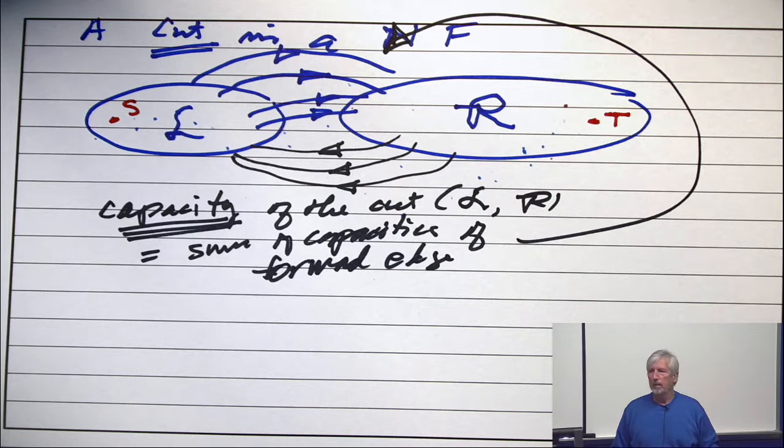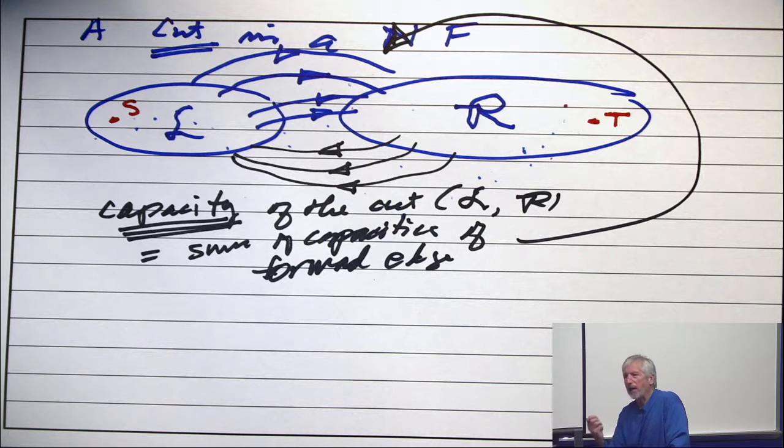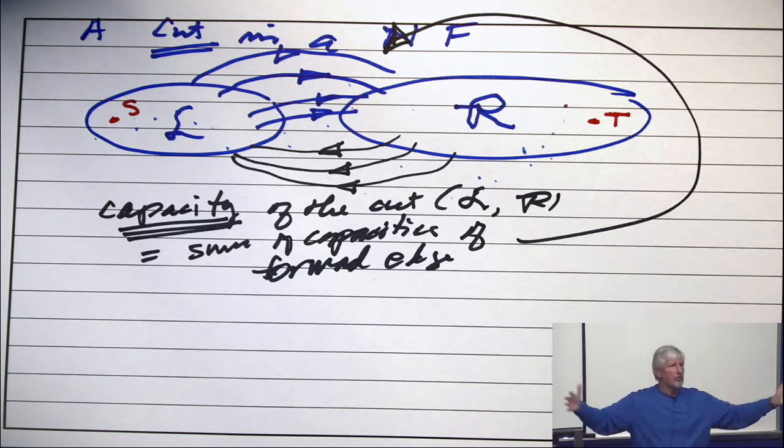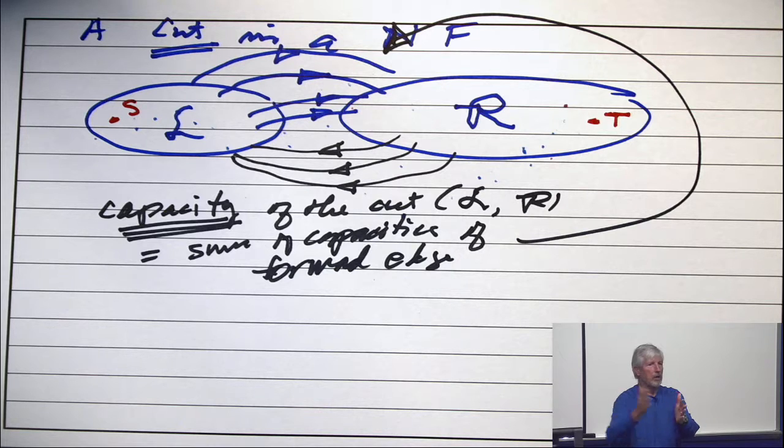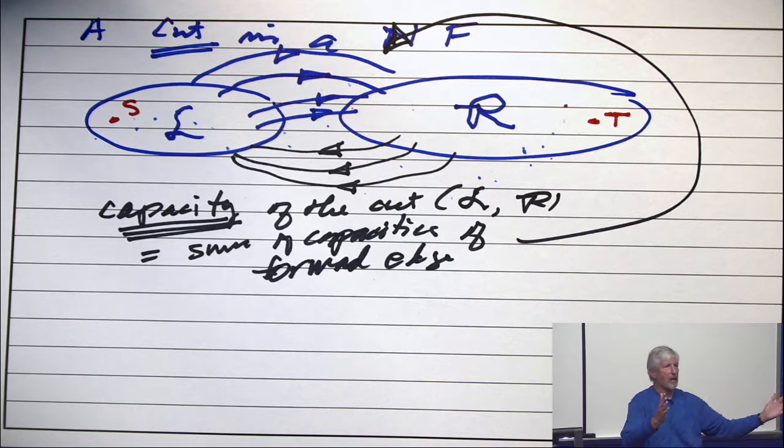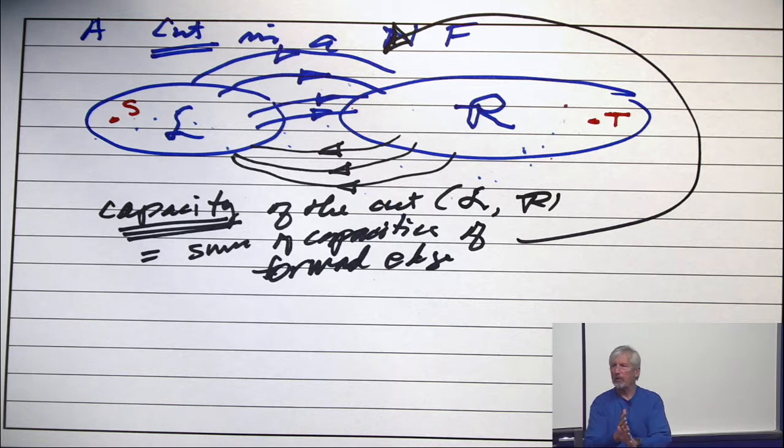Bottleneck. And now, do you know what the punchline is going to be? The maximum value of the flow is exactly equal to the minimum capacity of a cut. These two sets of numbers meet somewhere. The maximum value of a flow is exactly equal to the minimum capacity of a cut.